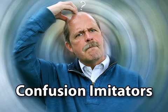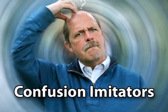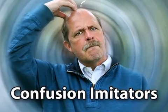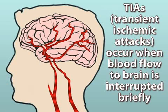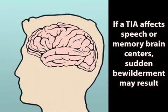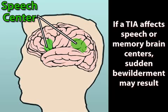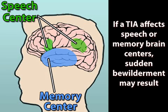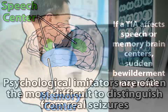Another category of seizure imitators are conditions that result in sudden confusion. This confusion may look like the uncertainty sometimes experienced by a person having a seizure. A transient ischemic attack, or mini-stroke, occurs when blood flow to the brain is briefly interrupted. If it affects the speech or memory centers in the brain, sudden bewilderment may result.